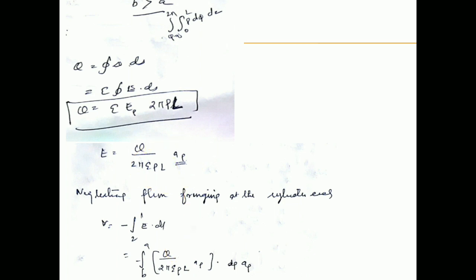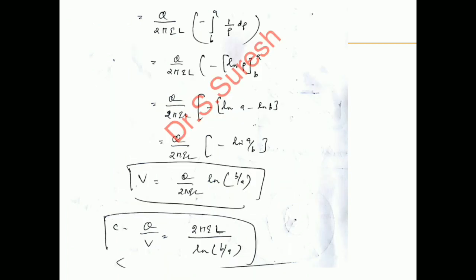The electric potential V equals minus the integral of E dot dl, ranging from b to a. Substituting E and using dl equals d_rho times a_rho for the cylindrical system, we get V equals Q divided by 2pi epsilon L times the integral from b to a of (1/rho) d_rho. Integrating gives ln(rho); applying the limits and accounting for the minus sign gives ln(b/a). Therefore, C equals Q divided by V equals 2pi epsilon L divided by ln(b/a), which is the capacitance for the coaxial capacitor.